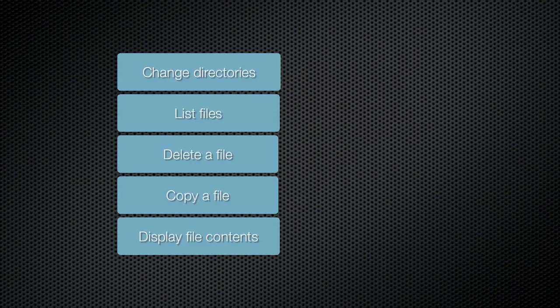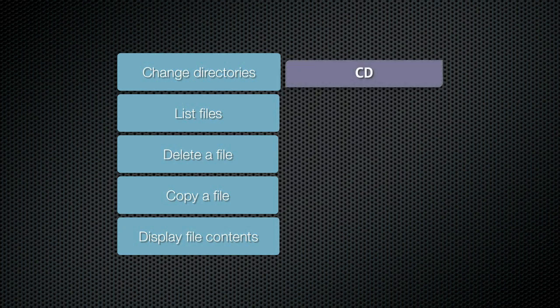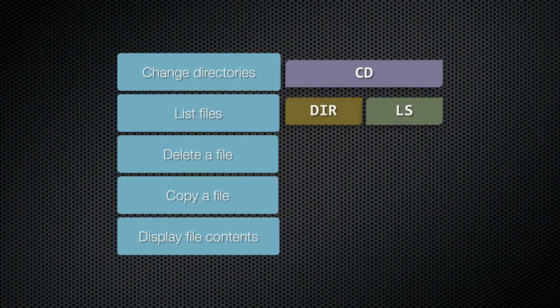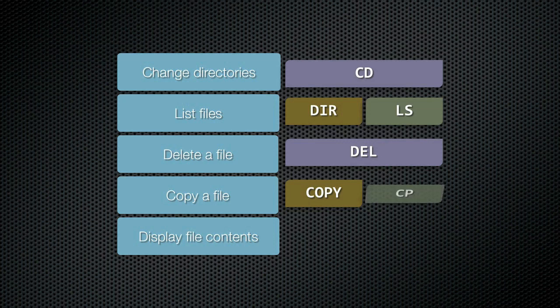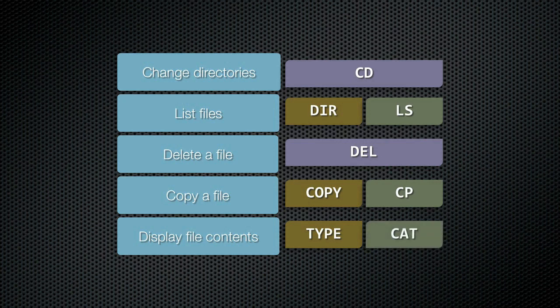Here's a command quiz. What command would you use to change directories from the command line? You'd probably use cd. What about getting a list of files and folders? You'd use dir, unless you're from a Unix world, in which case you might use ls instead. How would you delete a file? You'd probably use del. What about copying a file? A long-time Windows user might use copy, but a Unix person might use cp. What about displaying the contents of a text file? The Windows person might answer type, while a Unix person might be familiar with cat. The good news is that all of these commands also work in PowerShell, although there are some slight differences from the old commands you're used to. Let's take a look.